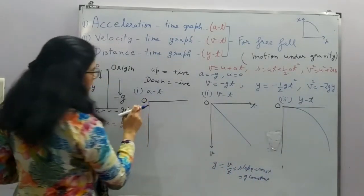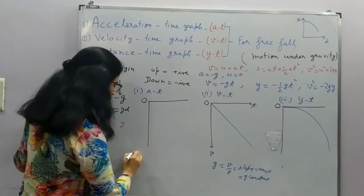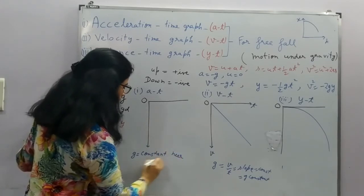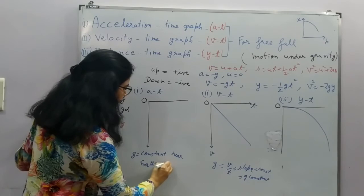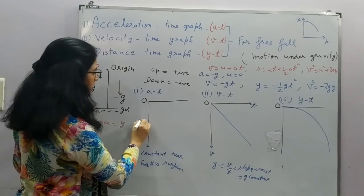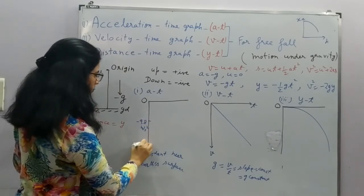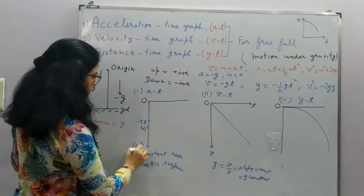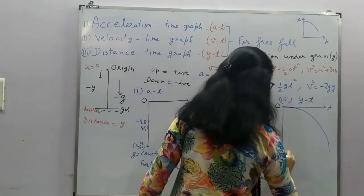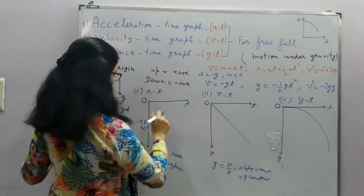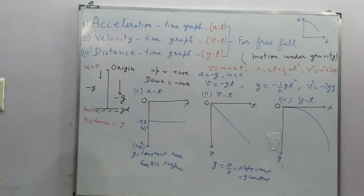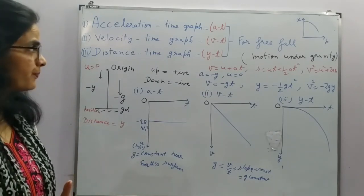And then we have this acceleration time graph. So this acceleration is g actually here, and g is constant near earth's surface. So that's why I will draw a line which is parallel to the time axis. Here this is time, this is distance, and here this will be a line parallel to the time axis. This is all about the graphs under free fall.